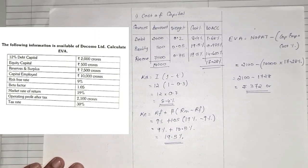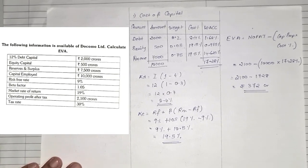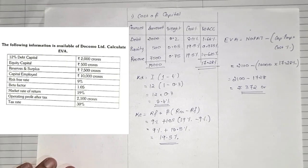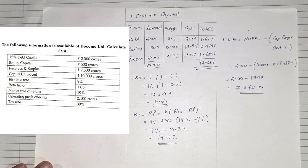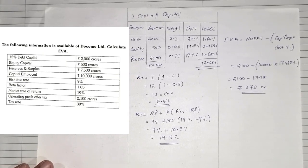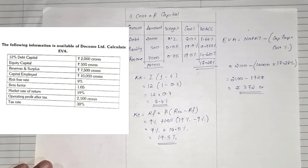When risk-free return and beta are given, you simply need to remember to use the CAPM formula for cost of equity. I hope everyone has understood this fourth type of sum under EVA. Now let us go ahead and see the fifth and final variation.